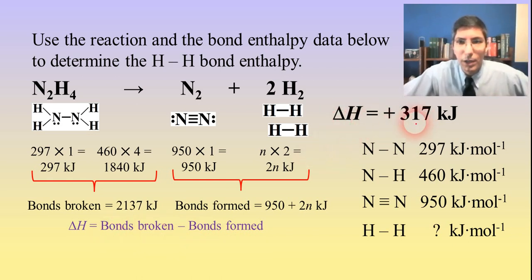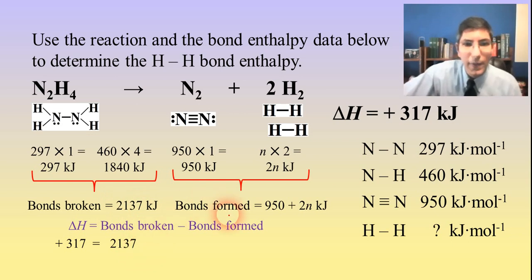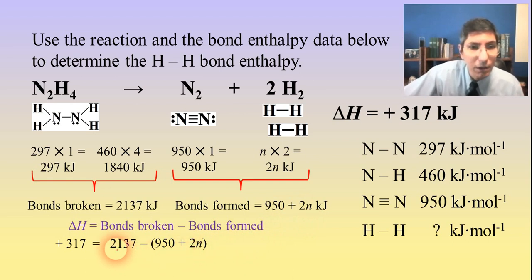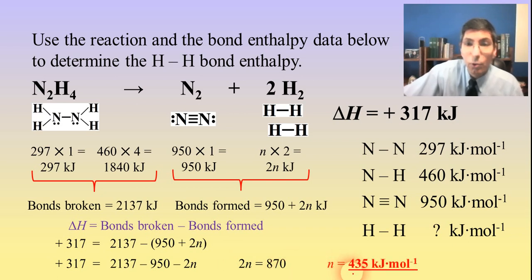We know that delta H equals bonds broken minus bonds formed. So we just plug in delta H is plus 317. Bonds broken would be 2137. And then bonds formed, we're going to subtract the quantity 950 plus 2n. So basically we're just solving for n here. Subtract 2137 from both sides and then add the 950. And we get 2n equals 870. Divide both sides by 2. We get that n is 435. So we can say that the hydrogen-hydrogen single bond has a bond enthalpy of 435 kilojoules per mole. So a little bit more complex problem, but still doable. Delta H equals bonds broken minus bonds formed.